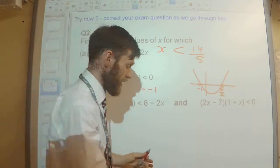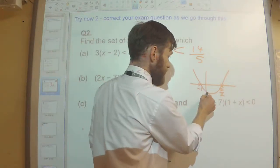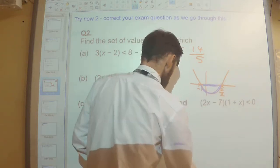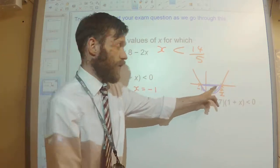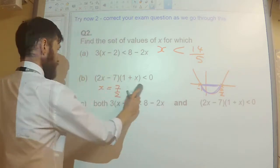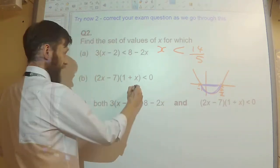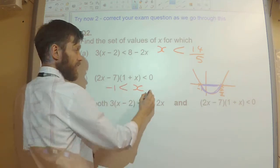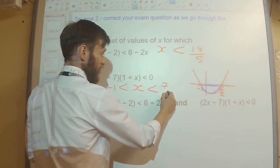When does the curve go below 0? Well, it's below 0 here, when x is in between minus 1 and 7 over 2. So x needs to be bigger than minus 1, but less than 7 over 2.